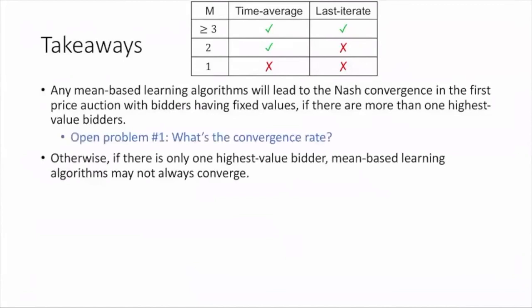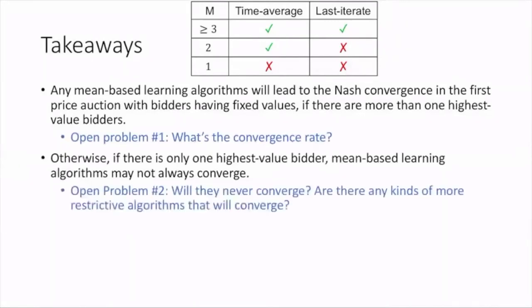For the convergence results, we'd like to ask about the open problem of convergence rates. For the non-convergence results, will they never converge or are there more restrictive algorithms that will converge? Besides all of this, it is definitely interesting to think about the stochastic setting of the first price auction. That's all for my talk. Thank you for listening.